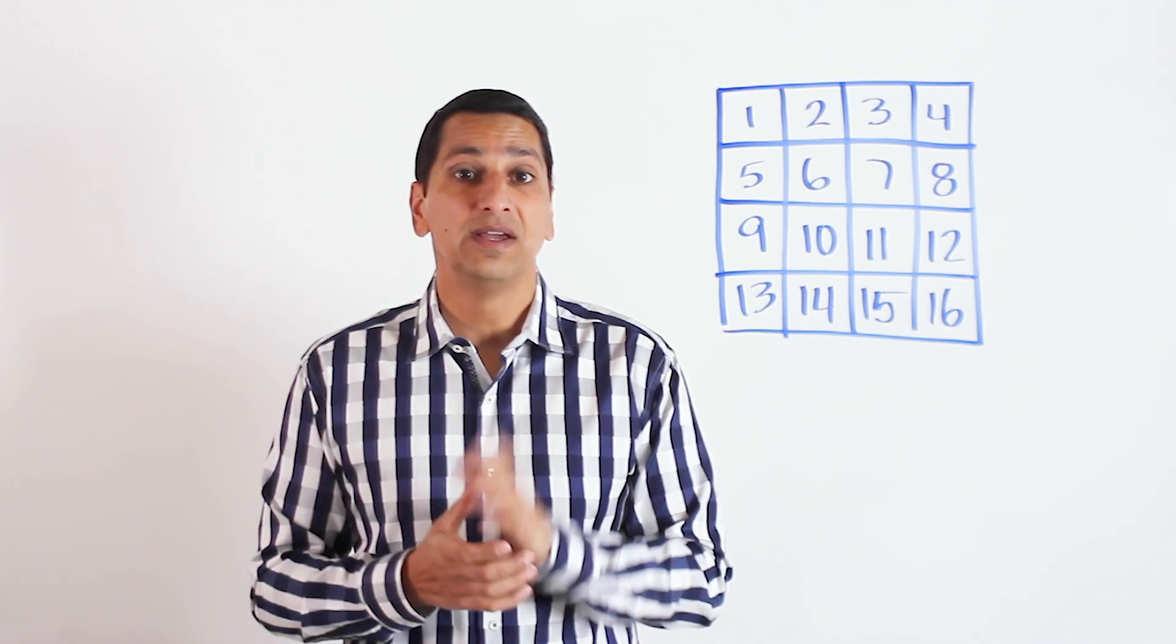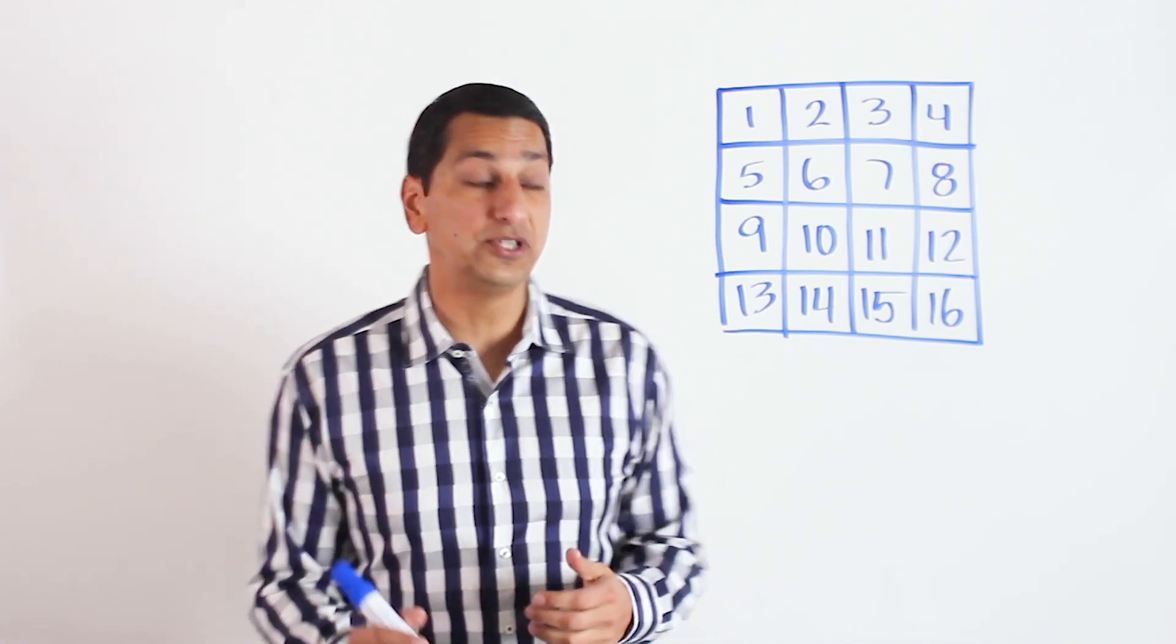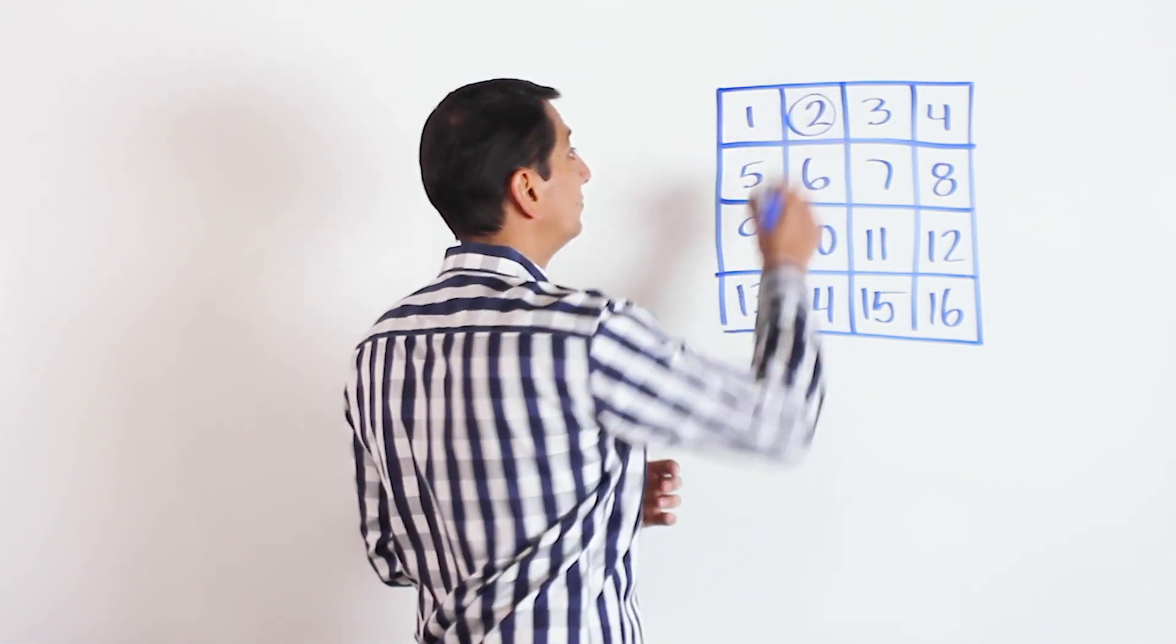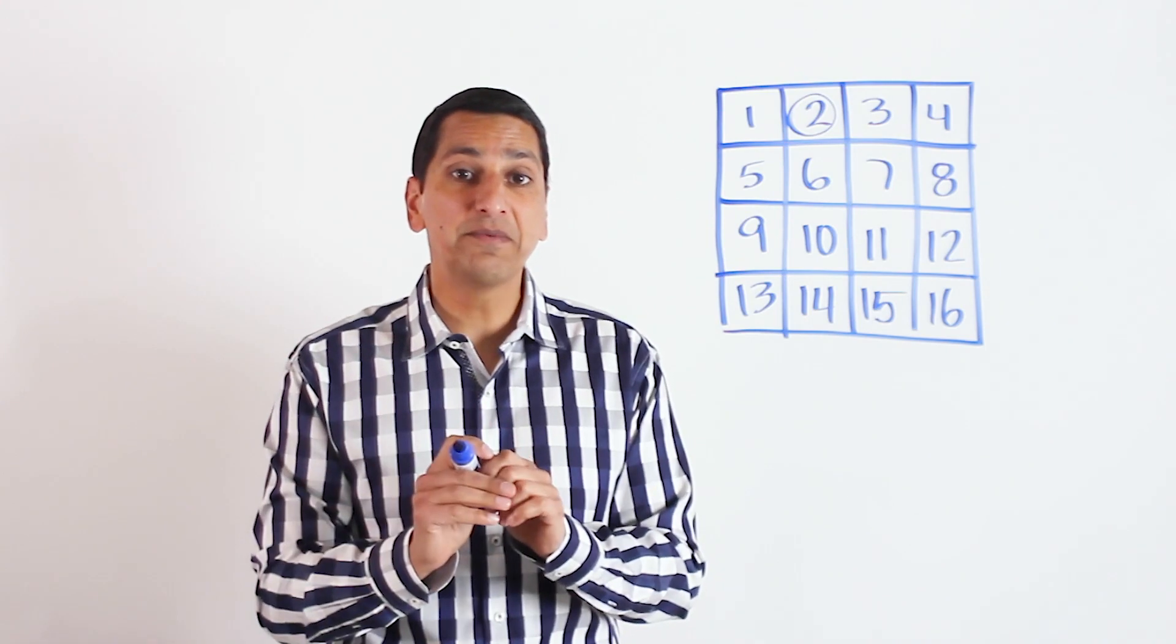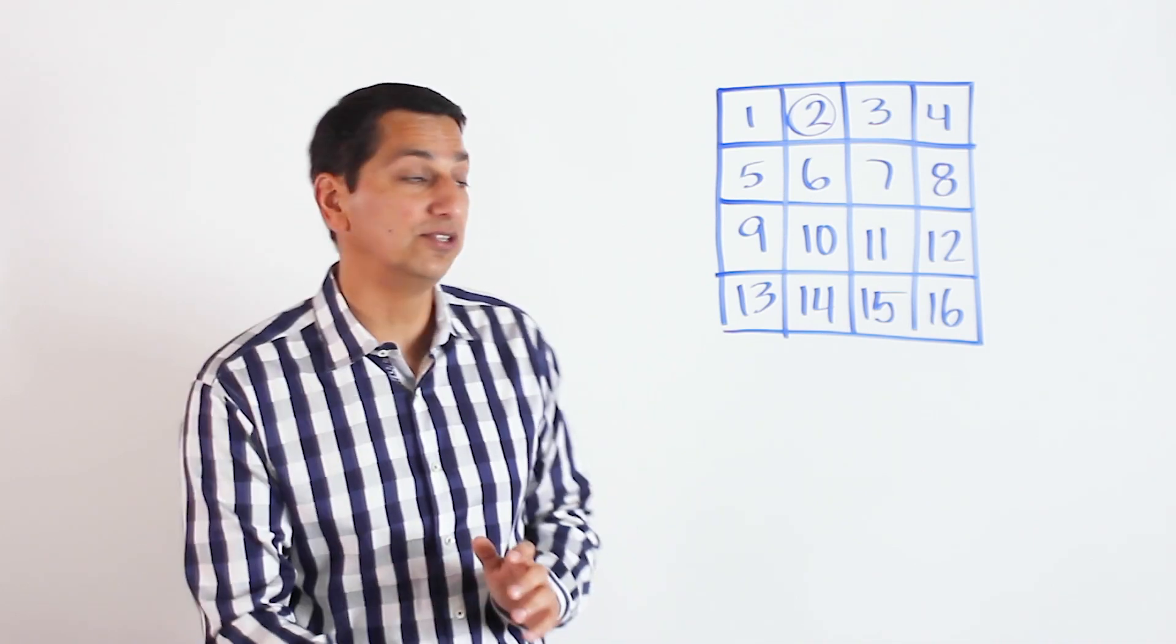Have that student choose a number in the first row. Let's suppose they choose the number two. Then have them cross out all the other numbers in the first row and all the numbers in the column with the two.